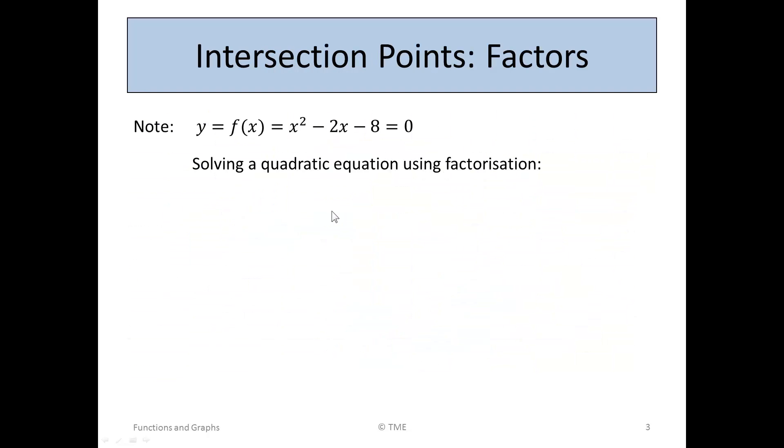So we're now going to solve a quadratic equation using factorization from algebra. Here's our quadratic, x squared minus 2x minus 8. We'd like that to be 0. So it's going to be a term in x plus or minus something by x plus or minus something. And because it's x squared, there's really only one option. It's x times x. So that bit is sorted.